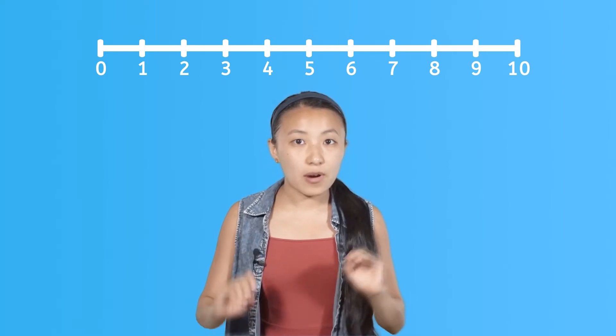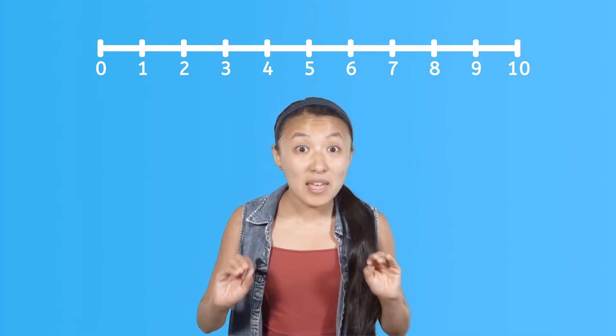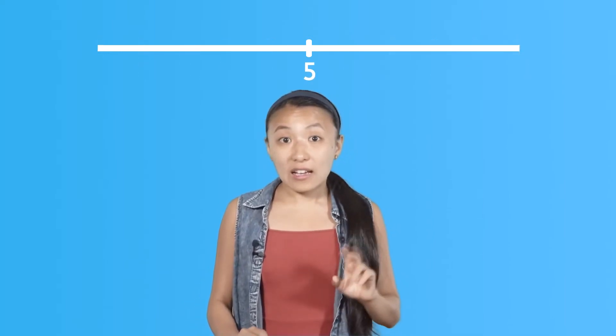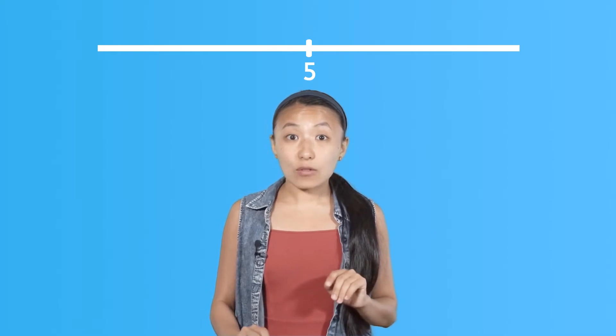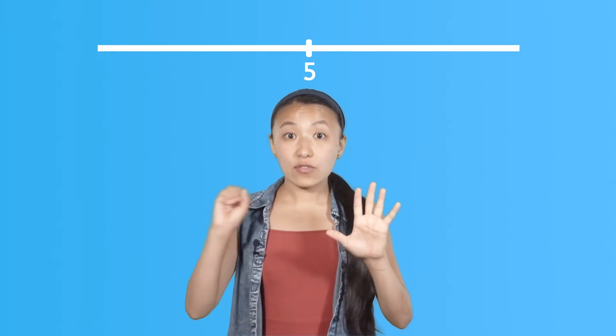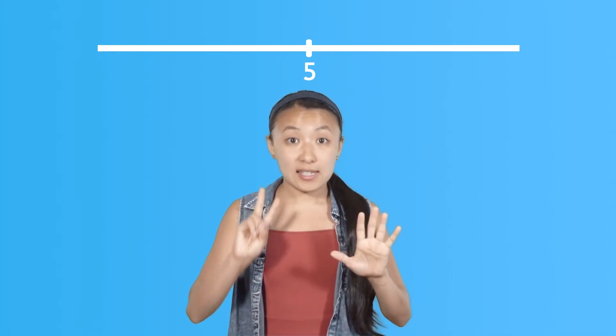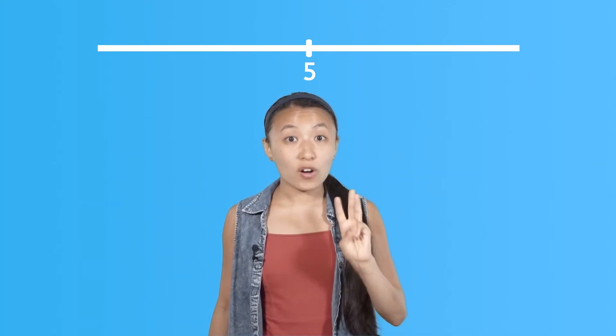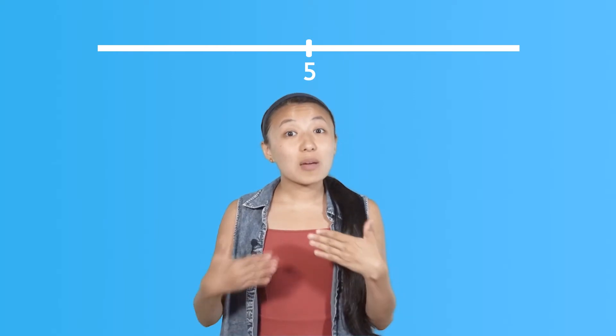We can even start somewhere in the middle of a number line, like at five. Then we can count forwards from five — like five, six, seven — or backwards from five — like five, four, three — by using the numbers around it.